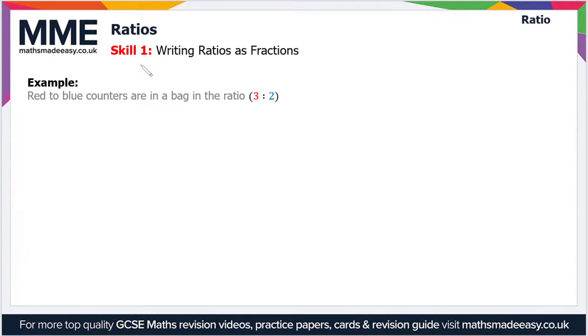When we have a ratio, it's usually expressed in terms of parts. Here we have an example where red to blue counters are in a bag in the ratio of 3 to 2, so the parts in this case are three and two.